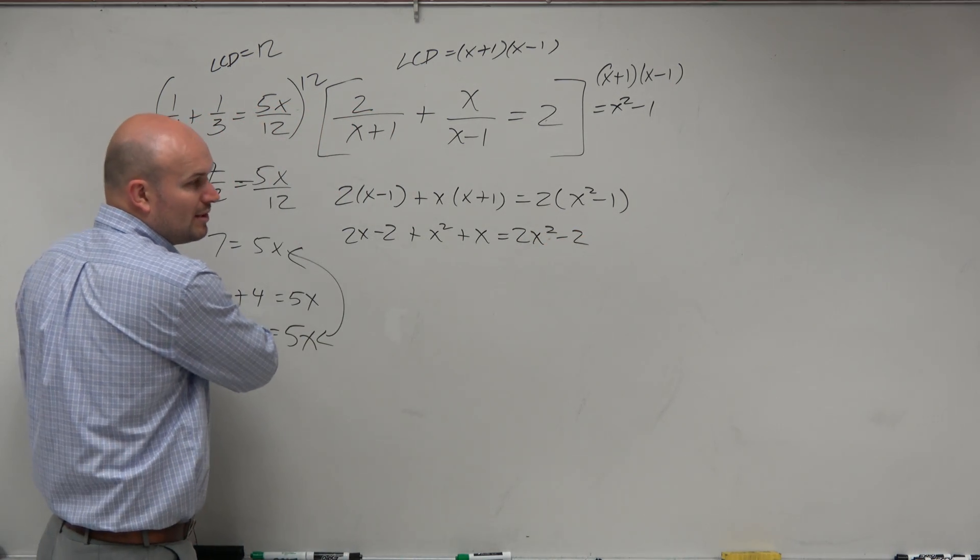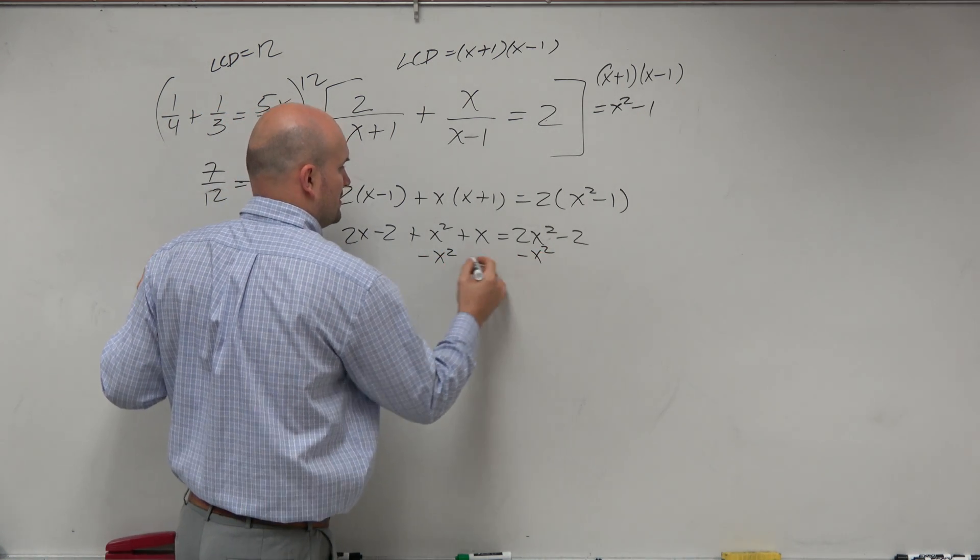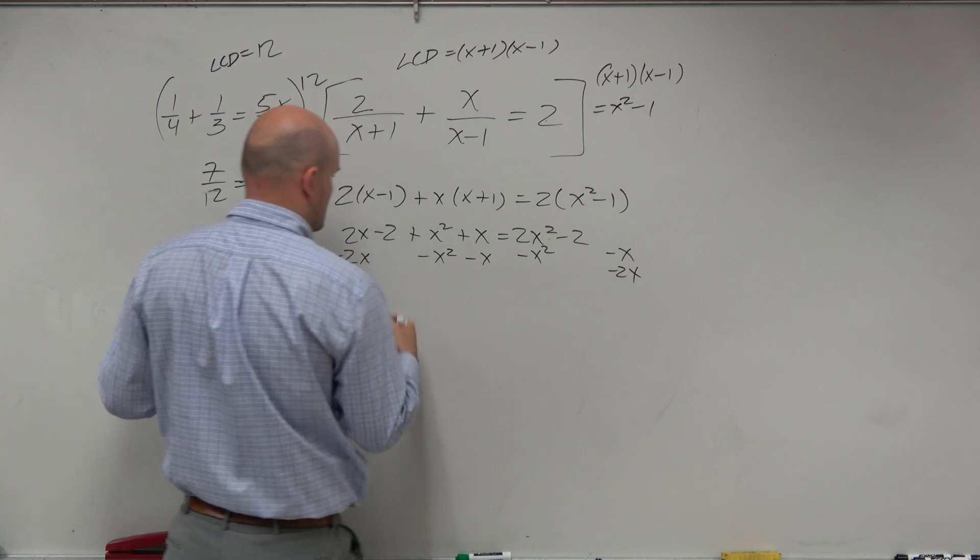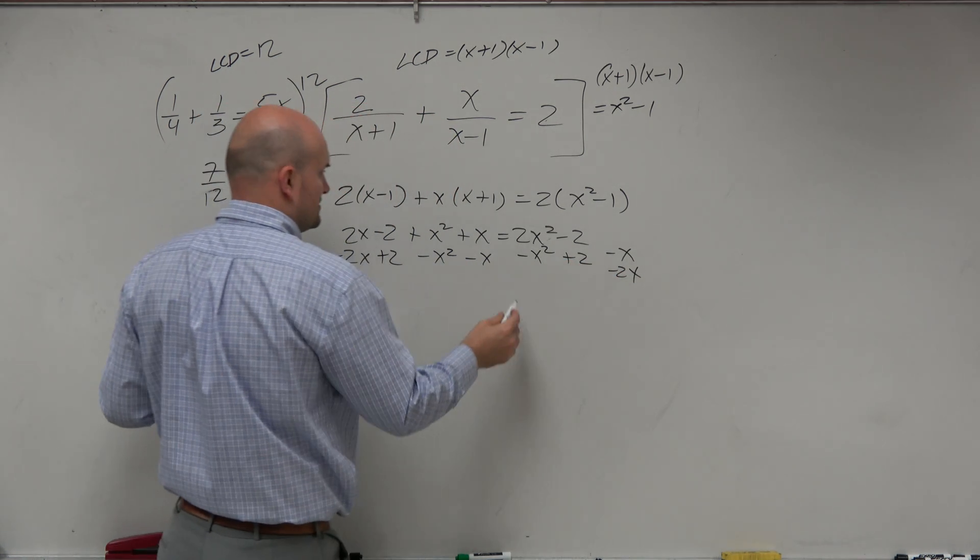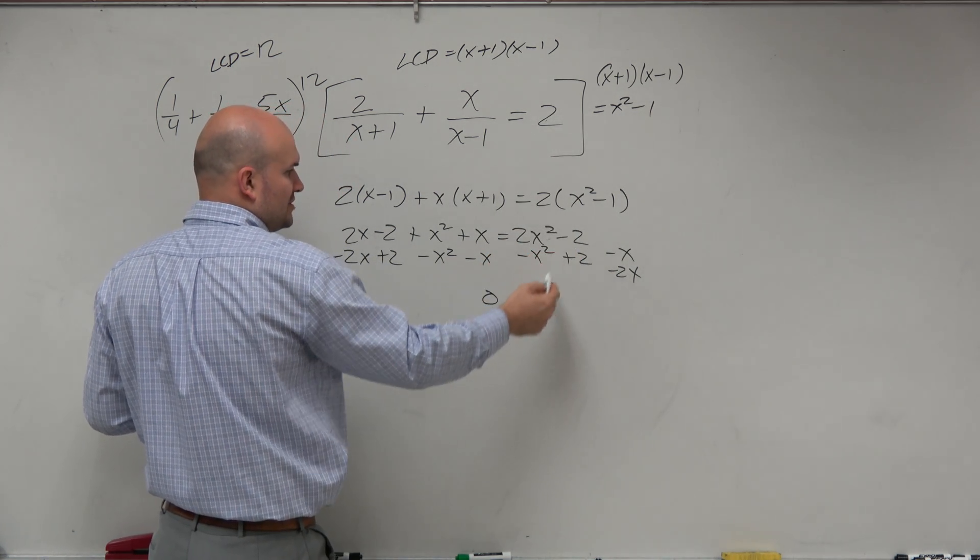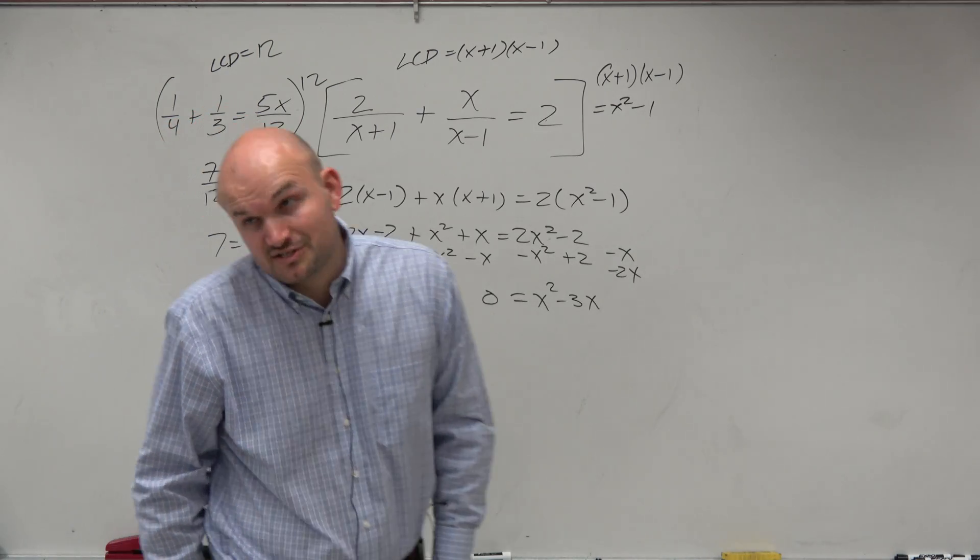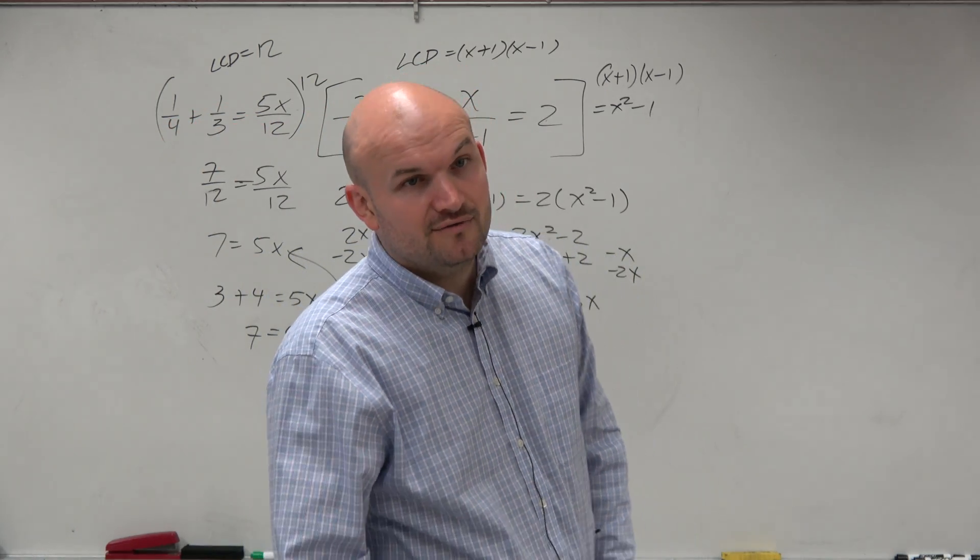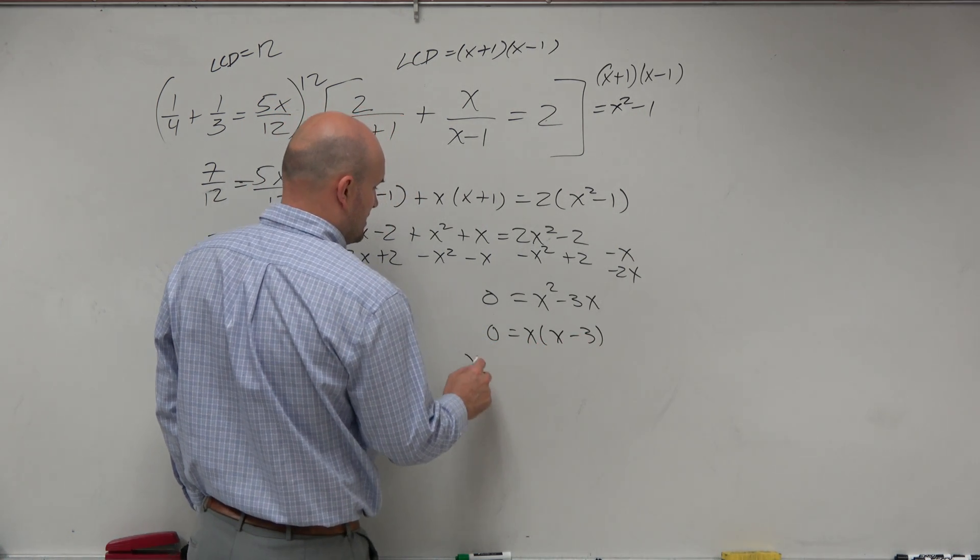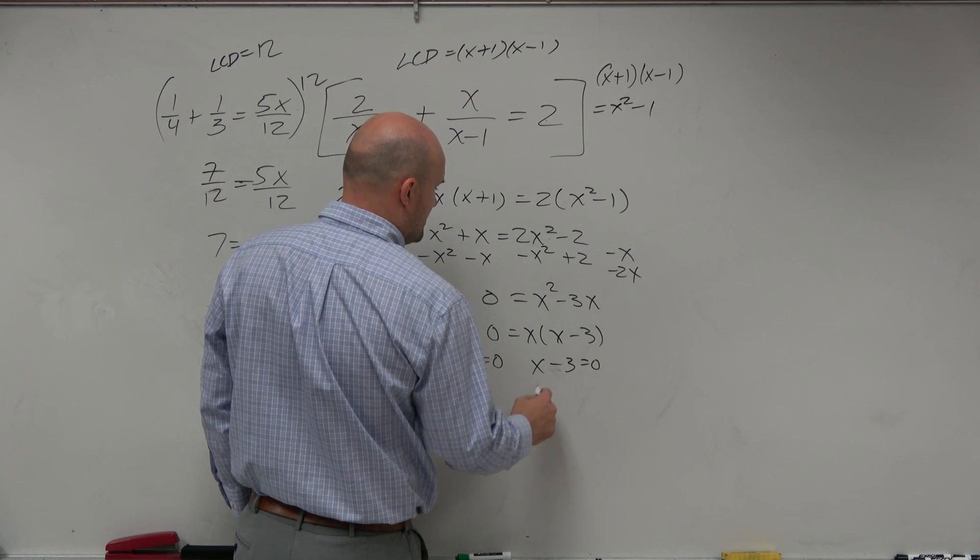Well, since we have a quadratic, we know we want to get everything to the same side and set equal to 0. So I'll subtract everything. Minus x squared minus 2x plus 2. So I get 0 equals x squared minus 3x. Then I still need to solve, right? So I can factor out an x and then apply the 0 product property. So x equals 0 or x minus 3 equals 0, so x equals 3.